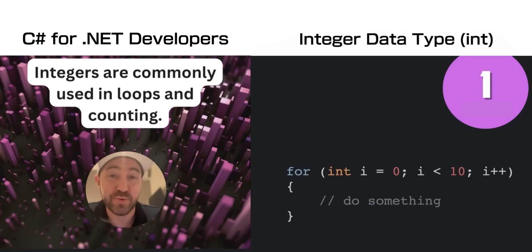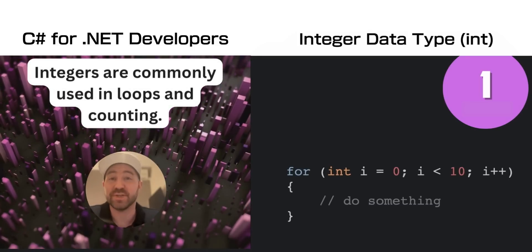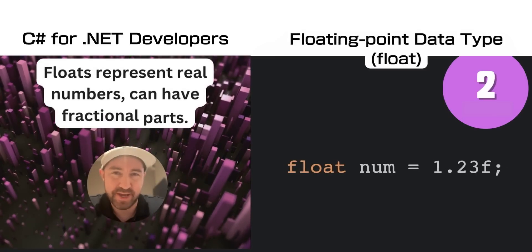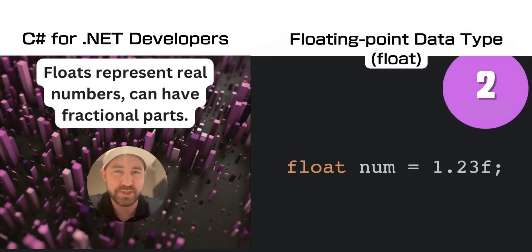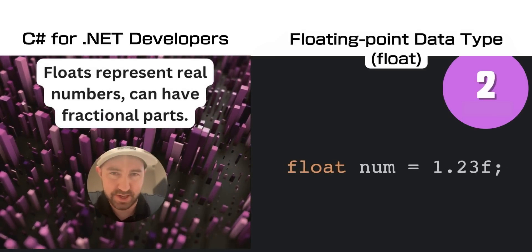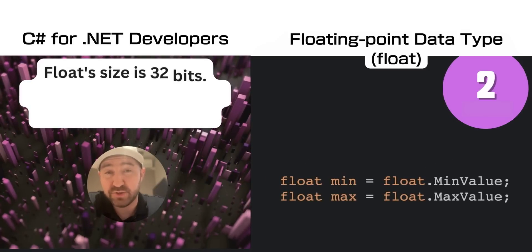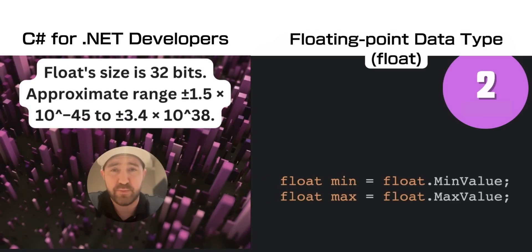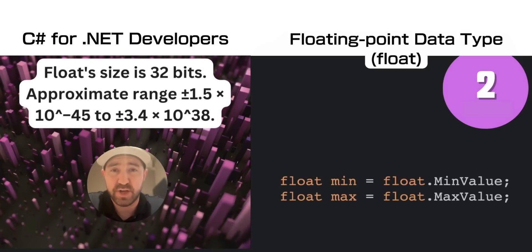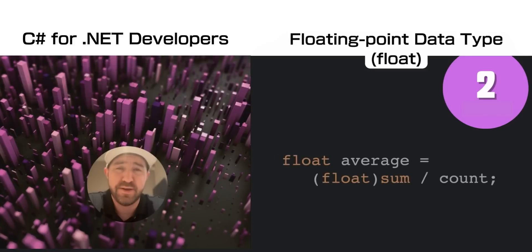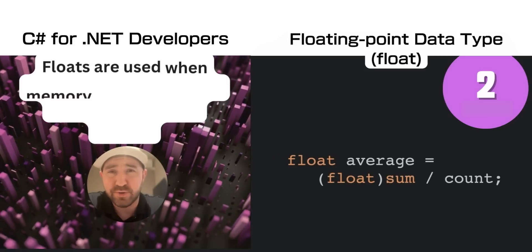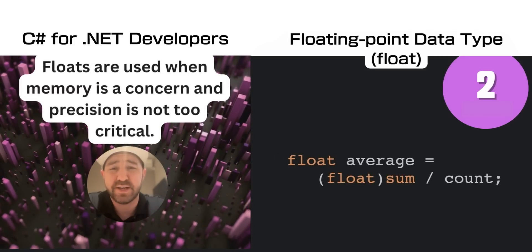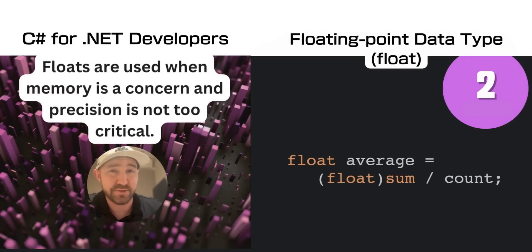They are commonly used in loops and counting, as you can see here. Our next data type is the float, or floating point data type. This is normally a fractional number. It uses 32 bits of memory space, so it can get pretty large. Normally you use floats when memory is important and precision is not entirely critical.